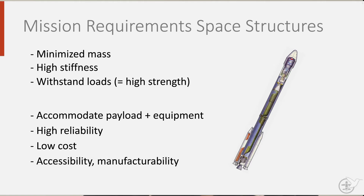Manufacturability and accessibility of the structure are also important. If you look at spacecraft, which form the payload that is carried up into space by the launcher, they typically have one of two types of structures which are used to transfer loads.